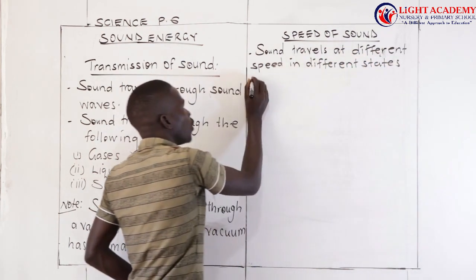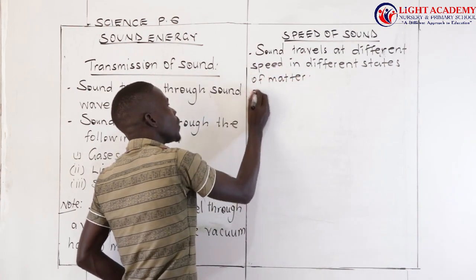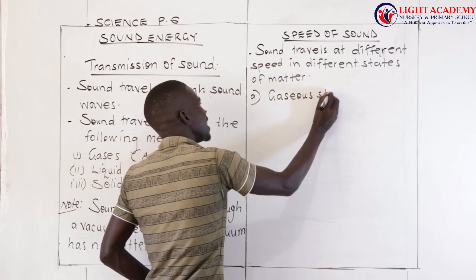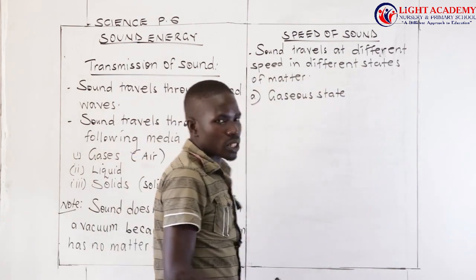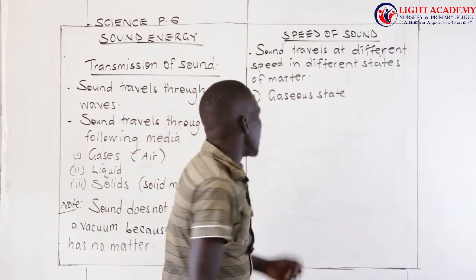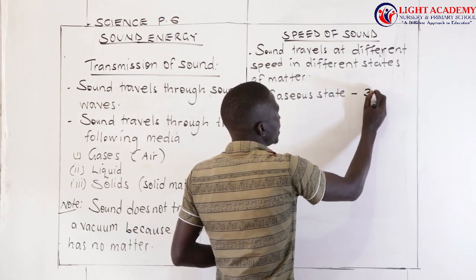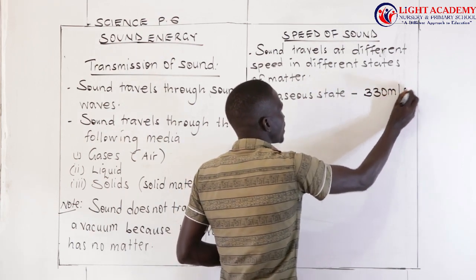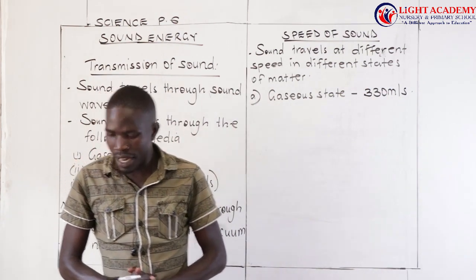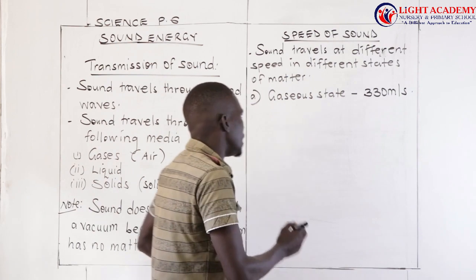In different states of matter, that is how sound travels. When we look at the gaseous state, the speed of sound in gaseous state — or in air — is 330 meters per second. That is the speed of sound in gaseous state: 330 meters per second, like in air.